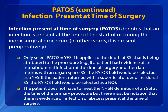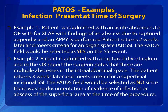We will review some examples. The patient does not have to meet the NHSN definition of an SSI at the time of the primary procedure, but evidence of infection or abscess present at the time of surgery must be noted. In the first example, a patient is admitted with an acute abdomen. In the OR during the exploratory laparotomy, there are findings of an abscess due to a ruptured appendix. An appendectomy is performed, and the patient returns two weeks later and meets criteria for an organ space intra-abdominal SSI.